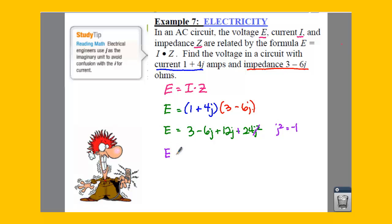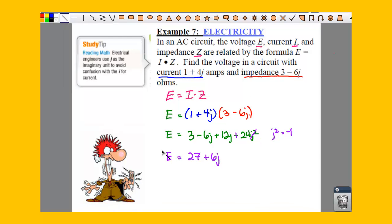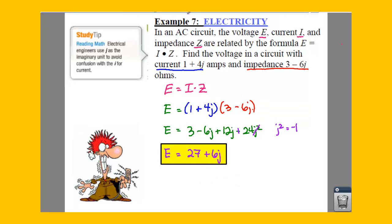Which means we can finally find our final voltage in our circuit, which is going to be 3 plus 24, which is 27. And then negative 6J plus 12J gives us 6J. So this would be your final answer after you distribute through. You are done with 4-4. Makes me so happy.